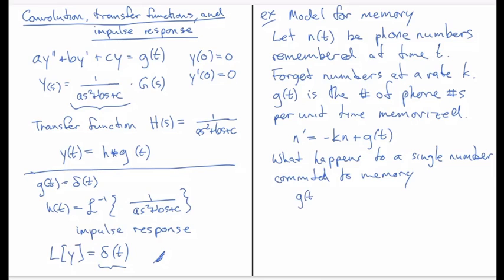So how do I represent that? Well, I'm going to make g of t equal to delta t, and that is I get one memory inserted at moment t equals zero. And so what I can do is then use that to find h of t. I can find h of s first. So h of s is the transfer function.